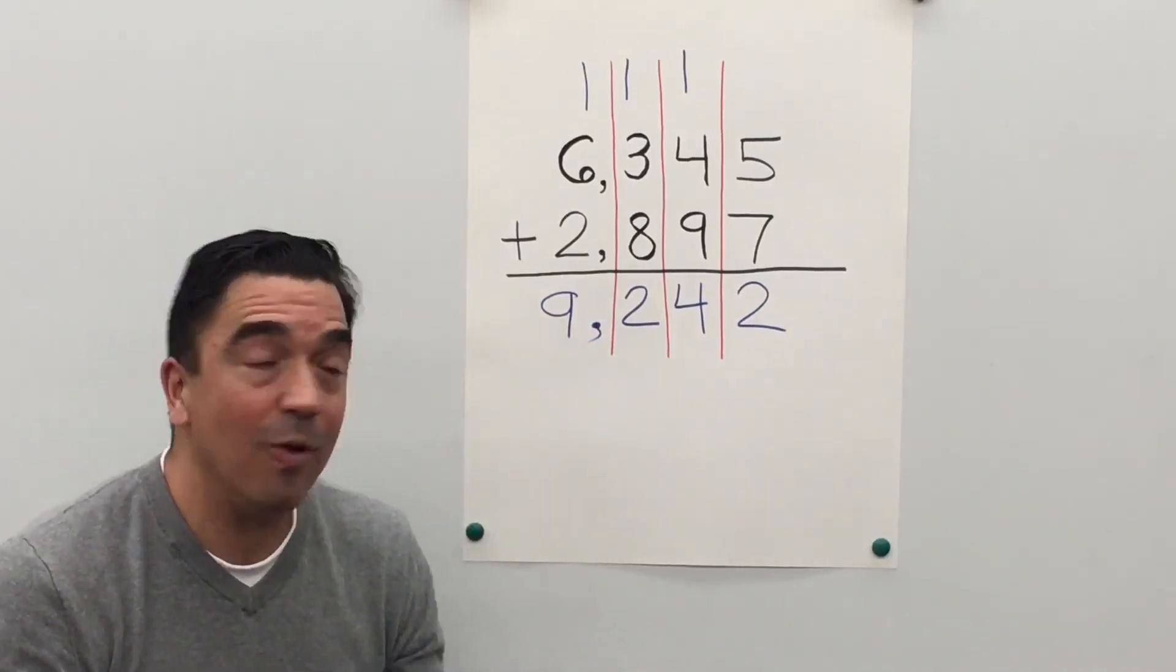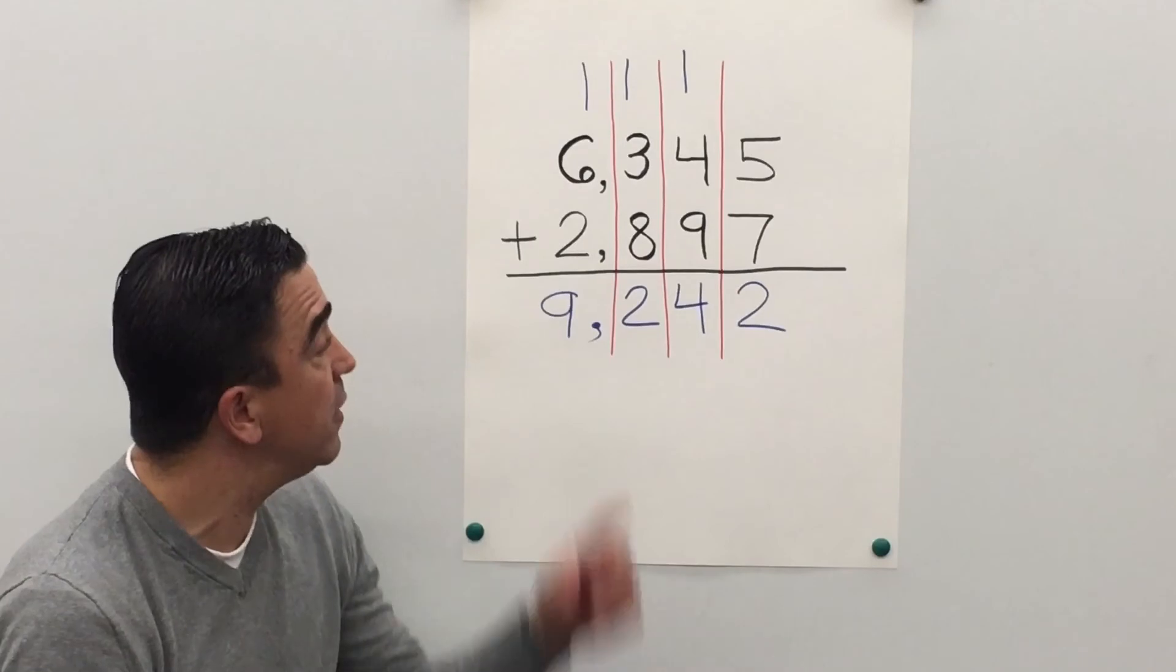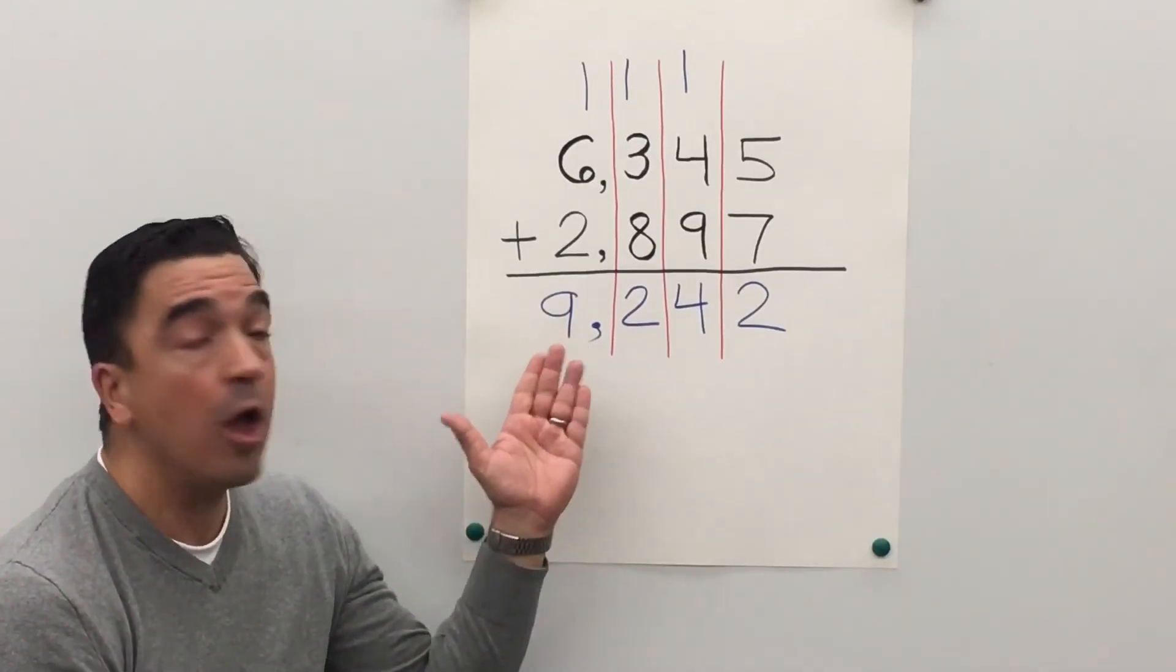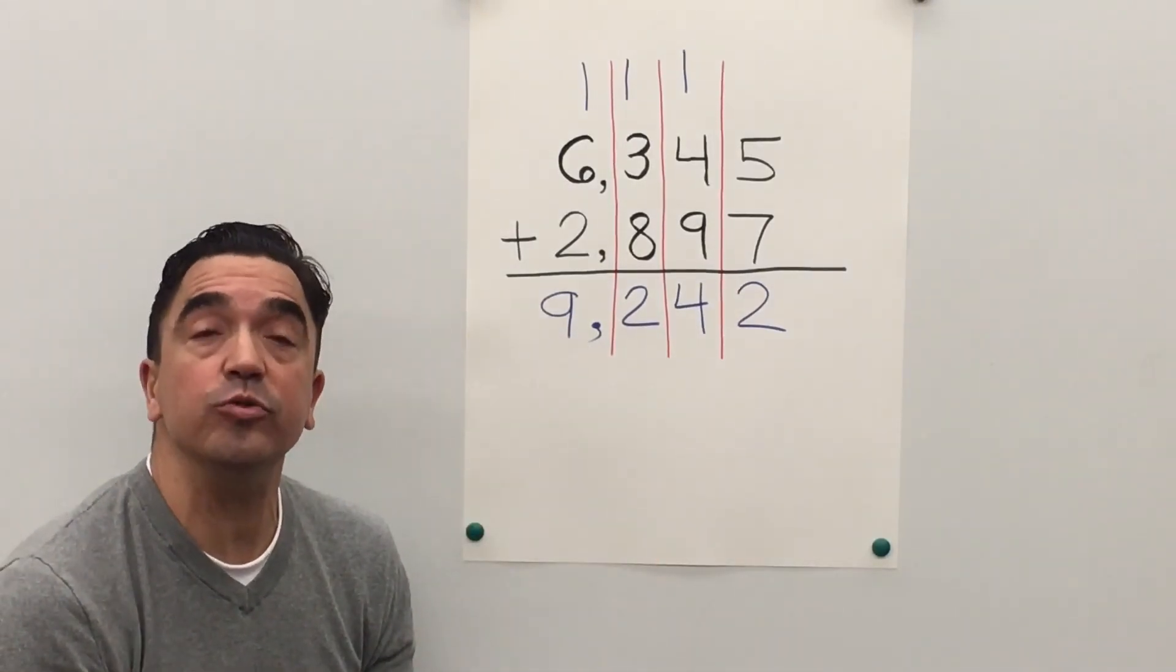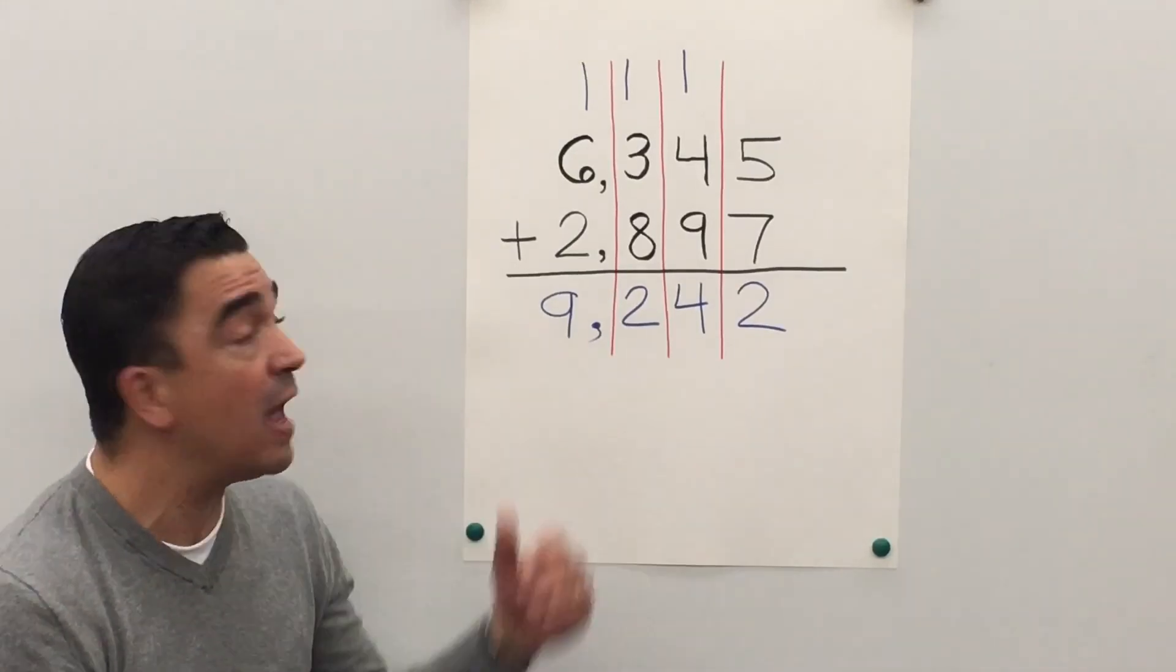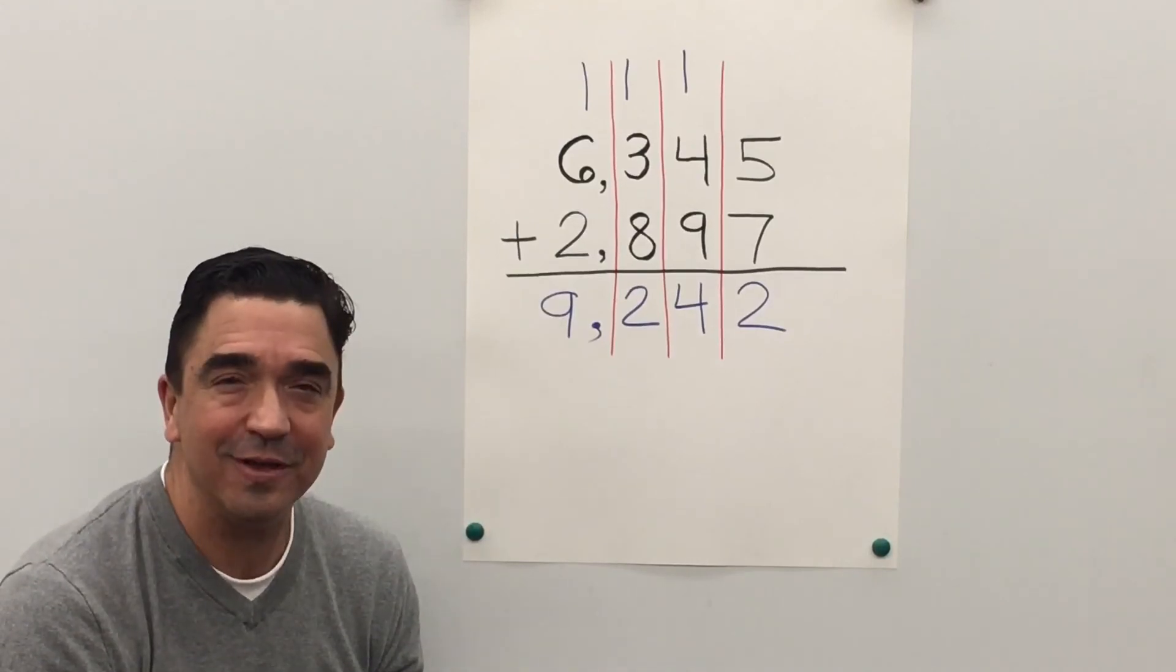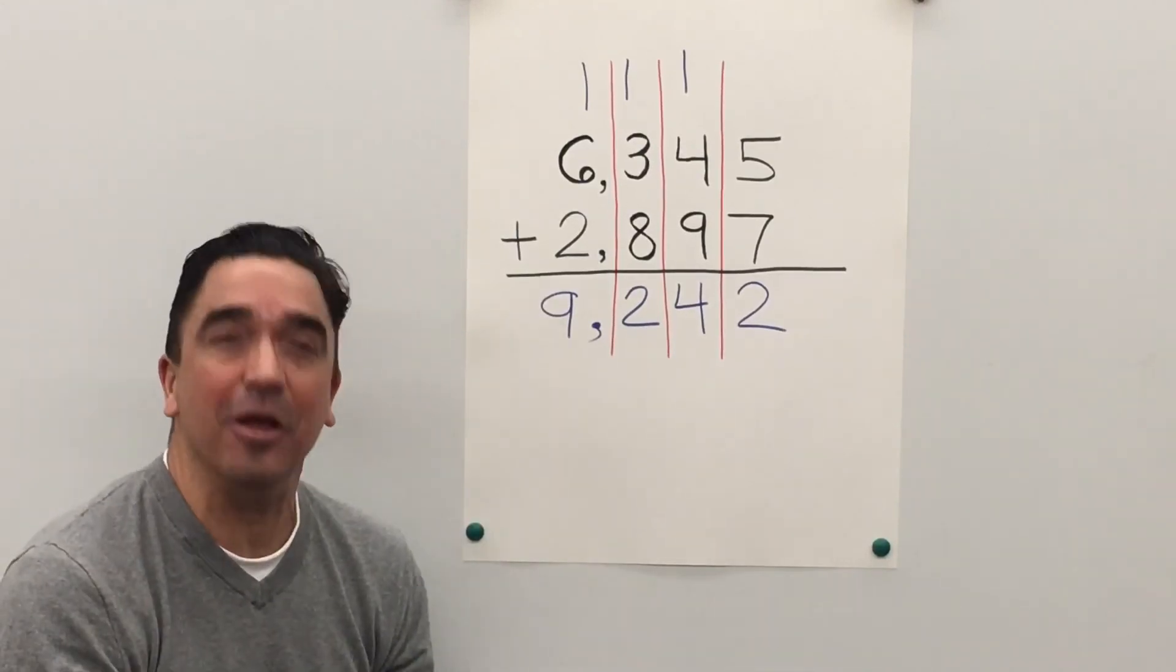So, 6,345 plus 2,897 gives us a sum of 9,242. And that concludes our lesson.